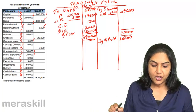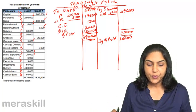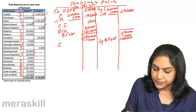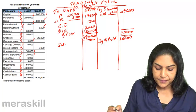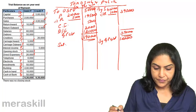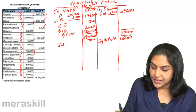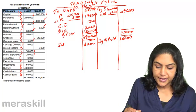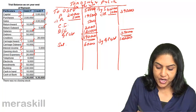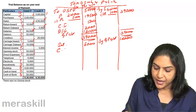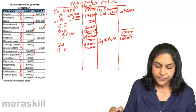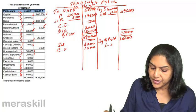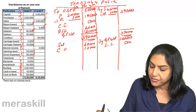Now for the profit and loss section: salaries are 60,000. Debtors and creditors go to the balance sheet. Carriage inward is already done; carriage outward is 10,000. Interest income is 5,000 — that goes on the income side of the profit and loss account.